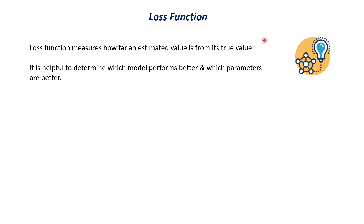Now let's understand the importance of loss function. Loss function helps determine which model performs better and which parameters are better. For example, if we have a support vector machine and a random forest model, we train both on a dataset and find the loss value for each. Whichever model has the lower loss value will make better predictions. A low loss value means there is little or no difference between the estimated value and the true value, so we want the loss function to be as low as possible.